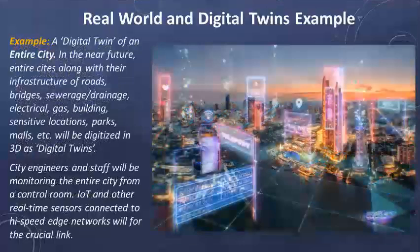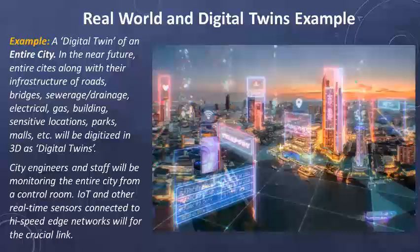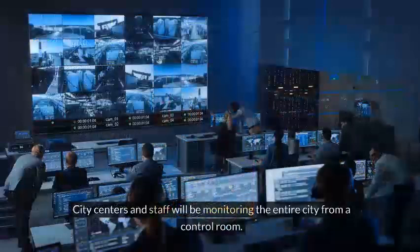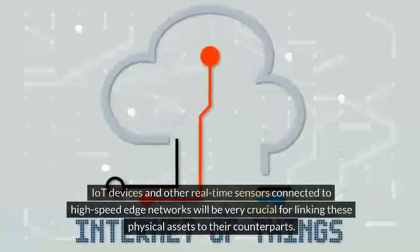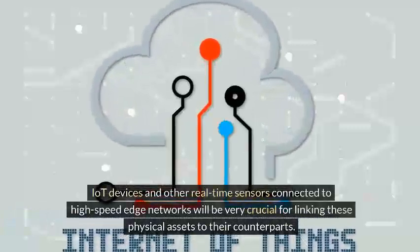Here is another example — a digital twin of an entire city in the near future. Entire cities, along with their infrastructure of roads, bridges, sewage, drainage, electrical, gas, buildings, sensitive locations, parks, and malls, will all be digitized and exist in a 3D virtual world as digital twins. City centers and staff will be monitoring the entire city from a control room. IoT devices and other real-time sensors connected to high-speed edge networks will be crucial for linking these physical assets to their counterparts.